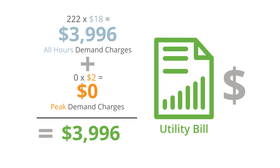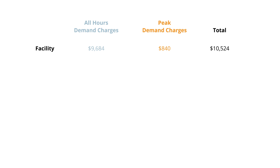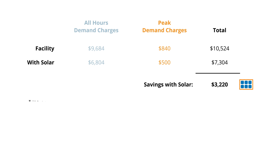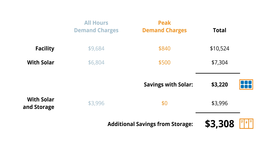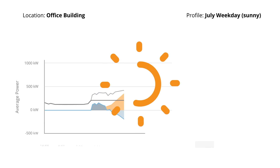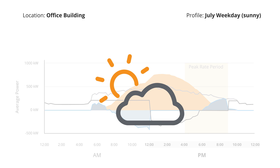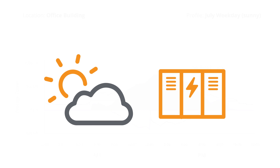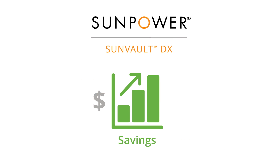So the total demand charges this month are now under $4,000. The original demand charges for this facility in July were over $10,000. After solar was installed, the customer saved $3,220. Sunvault DX storage was able to save an additional $3,308, for a total savings of over $6,500, reducing the original demand charges by about 62%. Keep in mind that this example simulates a perfectly sunny day in the middle of July. If a day turns out to be cloudy, Sunvault DX storage can help improve the value of solar by filling in the gaps when the system isn't producing energy, adapting in real time to maximize cost savings. Sunvault DX storage simply and effectively delivers more value than solar alone.